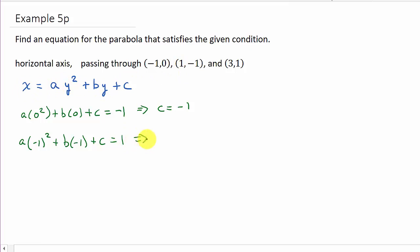And what this tells us, well negative 1 squared is 1, so 1 times a is a, and then minus b plus c equals 1. And then we do the next point.